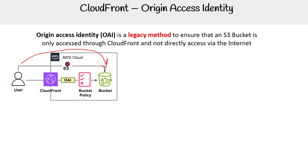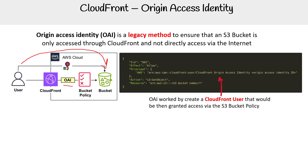The bucket policy would not allow anything other than from our OAI. The OAI is basically a special CloudFront user, and it will be granted access in the S3 bucket policy. If you look at the principal, we set AWS, it says CloudFront user — that's the only thing this CloudFront user is used for. We have to write CloudFront origin access identity and then the ID.